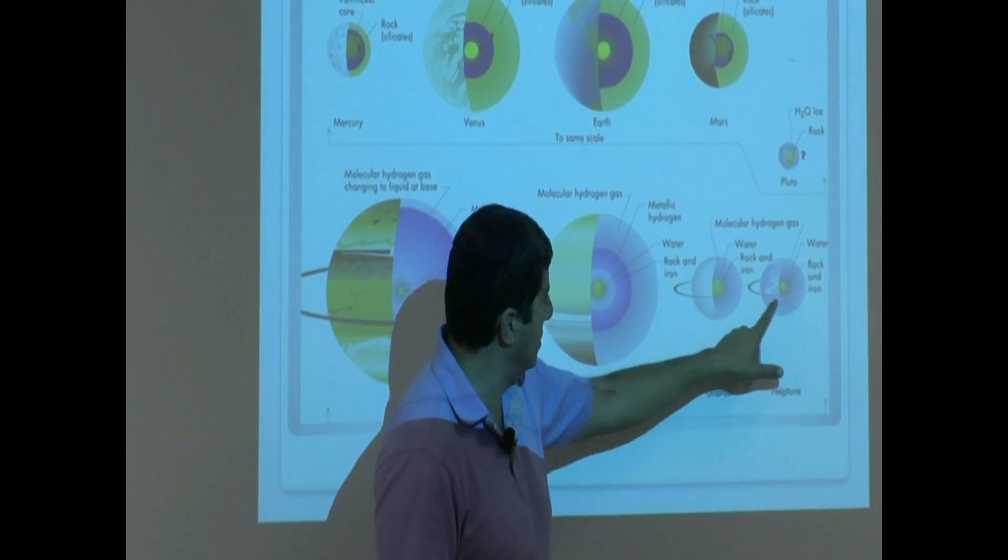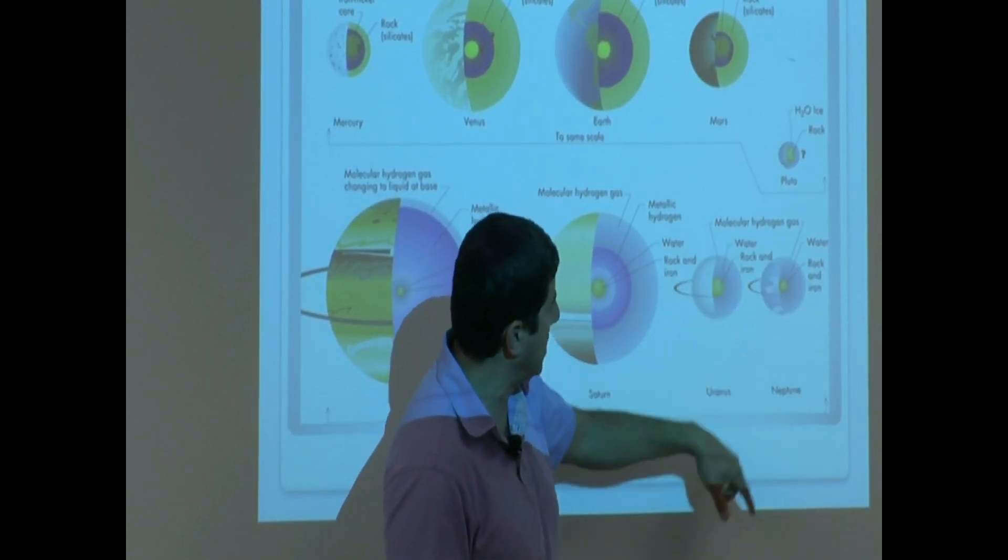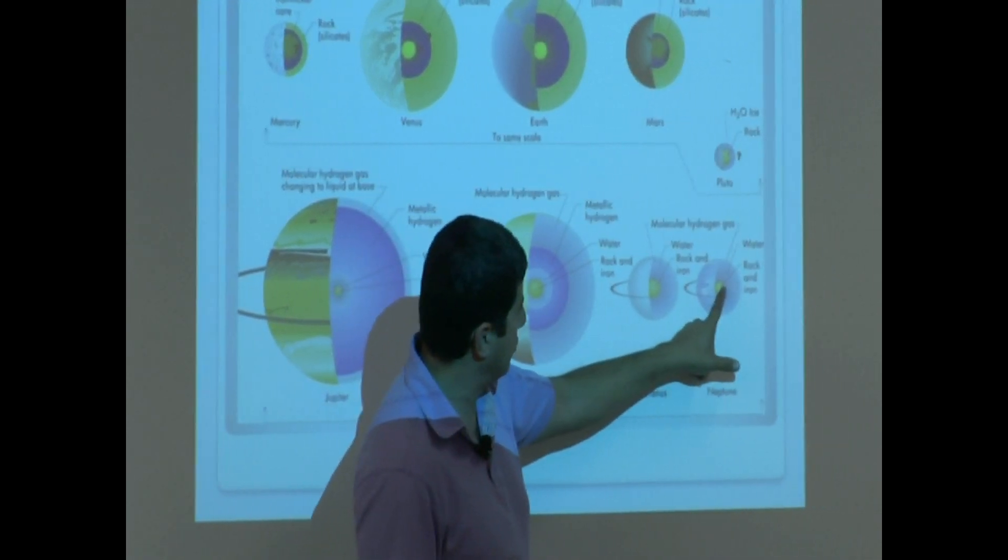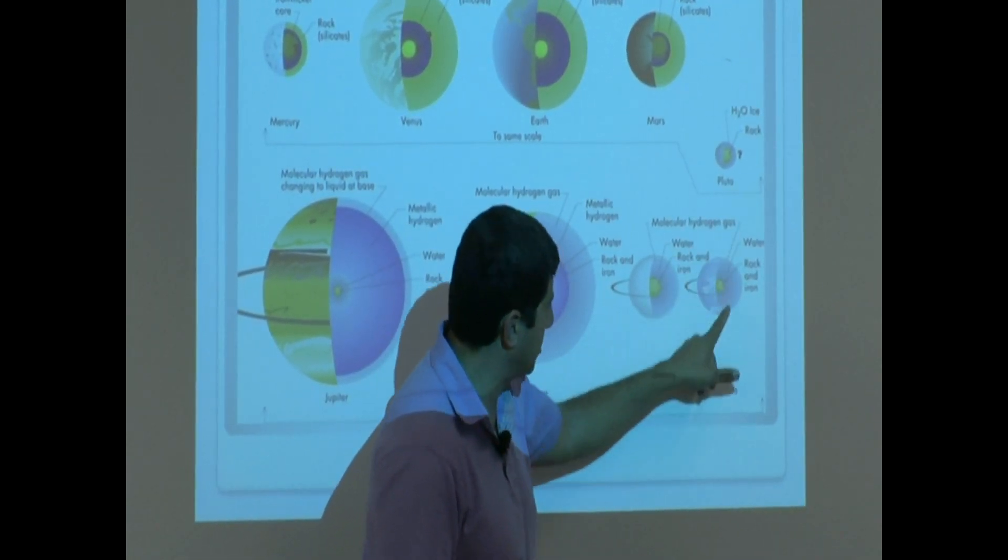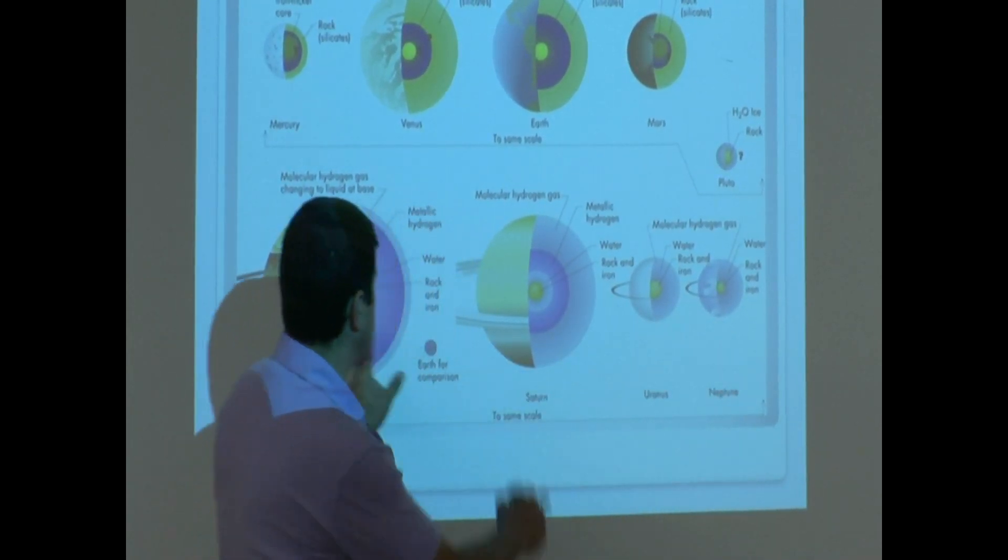Uranus and Neptune, rock and iron, water, molecular hydrogen. Rock and iron, water, molecular hydrogen. What's the most obvious difference you see between these two versus these two?